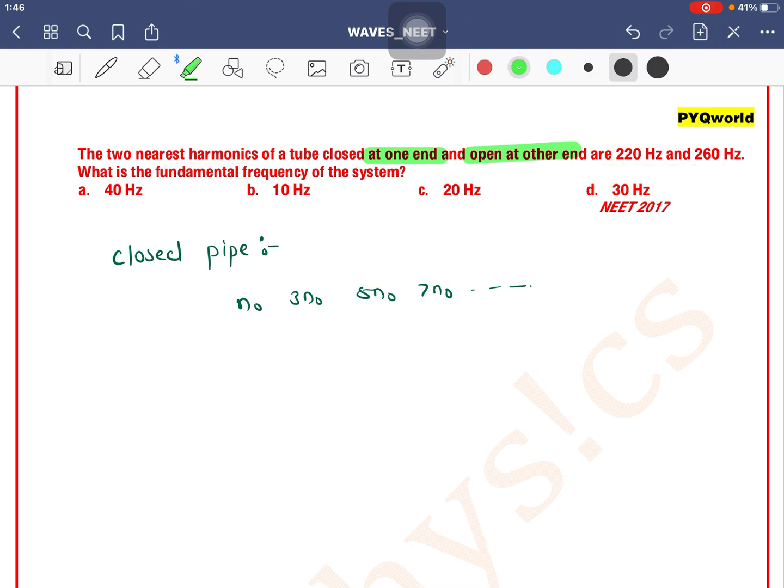If we consider any two nearest frequencies, let the frequencies be 3n₀ and 5n₀. This is the difference between the two. 5n₀ minus 3n₀ is equal to 2n₀, right?